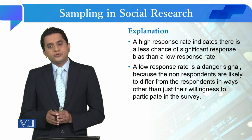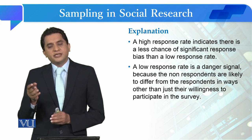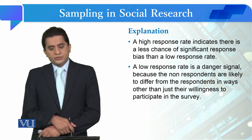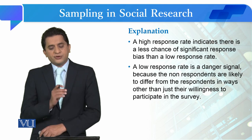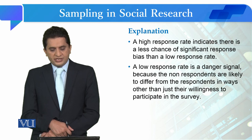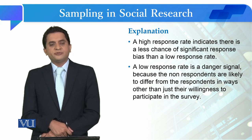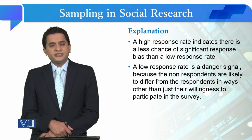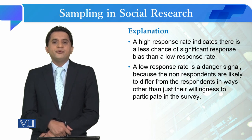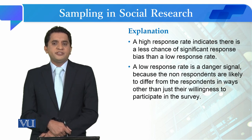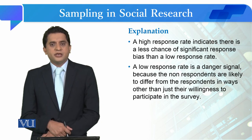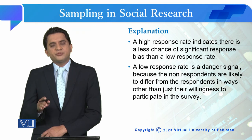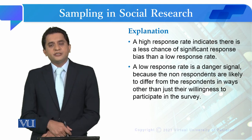If the response rate is low, the probability of selection bias increases; if the response rate is high, the probability of response bias decreases. A low response rate is a danger signal because the non-respondents are likely to differ from the respondents in ways other than just their willingness to participate in the survey. If your study's response rate is low and non-response rate is high, it means there are certain issues — it could be with the face validity, internal validity, or external validity of your tool. So if your non-response rate is higher than your response rate, you have to again check your tool of data collection and your sampling strategy.